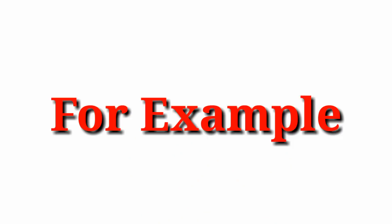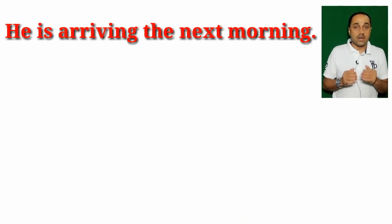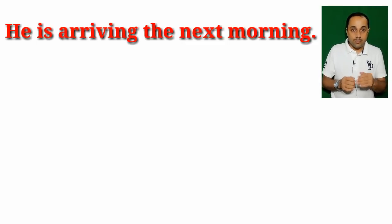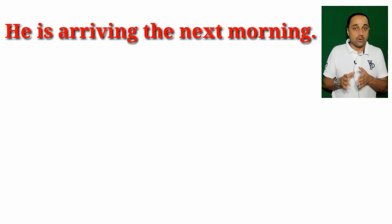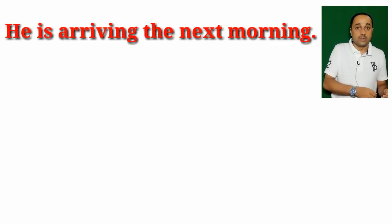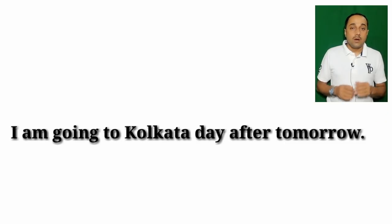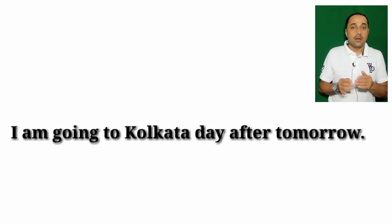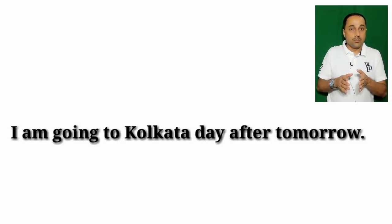The present continuous tense is also used for near future plans. For example: 'He is arriving the next morning.' This means it is planned for the near future.